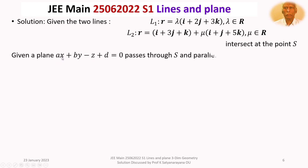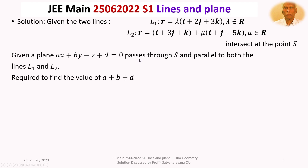Given a plane AX + BY - Z + D passes through S, the point of intersection of L1 and L2, and is parallel to both lines L1 and L2. We are asked to find the value of A + B + D.